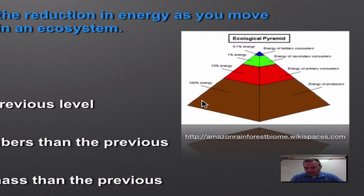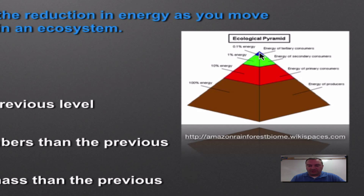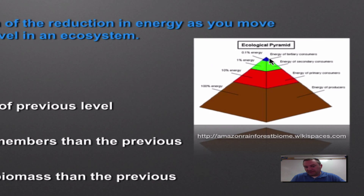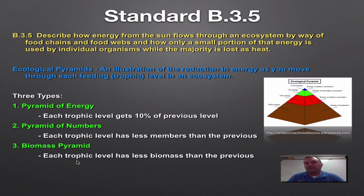Looking at the diagram: you have 100% energy at the first trophic level, only 10% available at the next, then 1%, then one-tenth of a percent. So there are lots of producers, fewer primary consumers, even fewer secondary consumers, and the fewest tertiary consumers. Similarly, biomass decreases at each level. All three pyramids are connected because they're all driven by the amount of energy available.